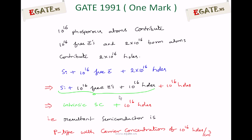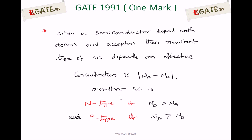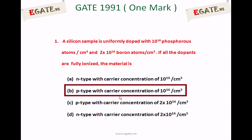The resultant semiconductor is P-type with carrier concentration of 10^16 holes per centimeter cube. In conclusion, when a semiconductor is doped with both donors and acceptors, the effective concentration is |Na − Nd|. It becomes N-type if Nd > Na, otherwise P-type. The correct answer is P-type semiconductor with carrier concentration of 10^16 per centimeter cube. Thank you.